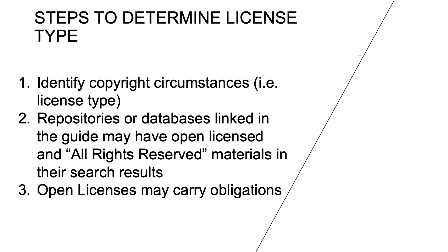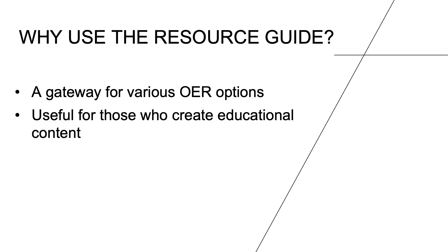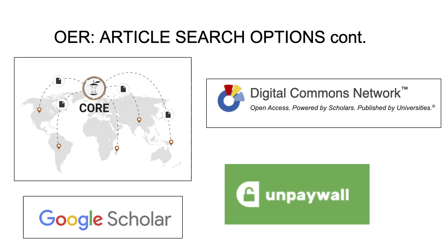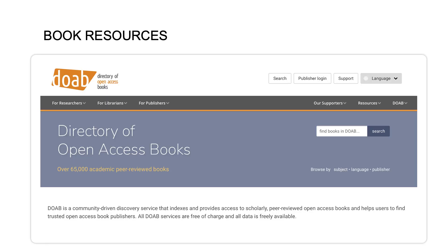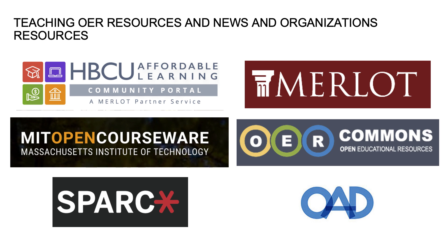For now, let's focus on finding OERs. The resource guide can be helpful to the sourcing process since it's a gateway for various OER options all in one place, and therefore can prove useful for those who create educational content. Here are some of the main repositories it compiles: article options like Core and the Digital Commons Network, OER book options like the Directory of Open Access Books, as well as teaching resources and news organizations, including one you may be familiar with called OpenCourseWare, or OCW.